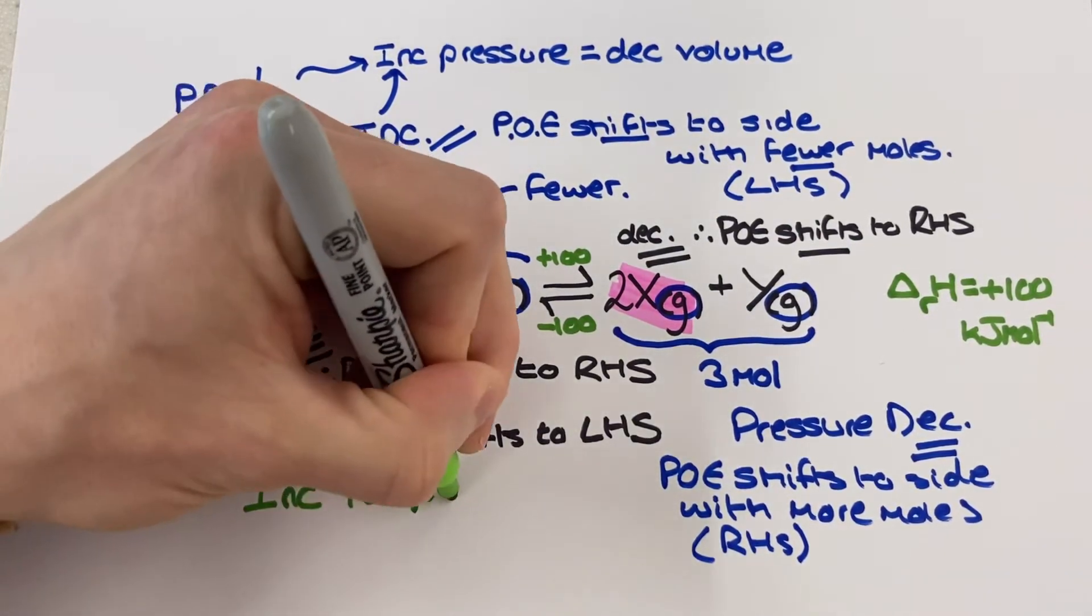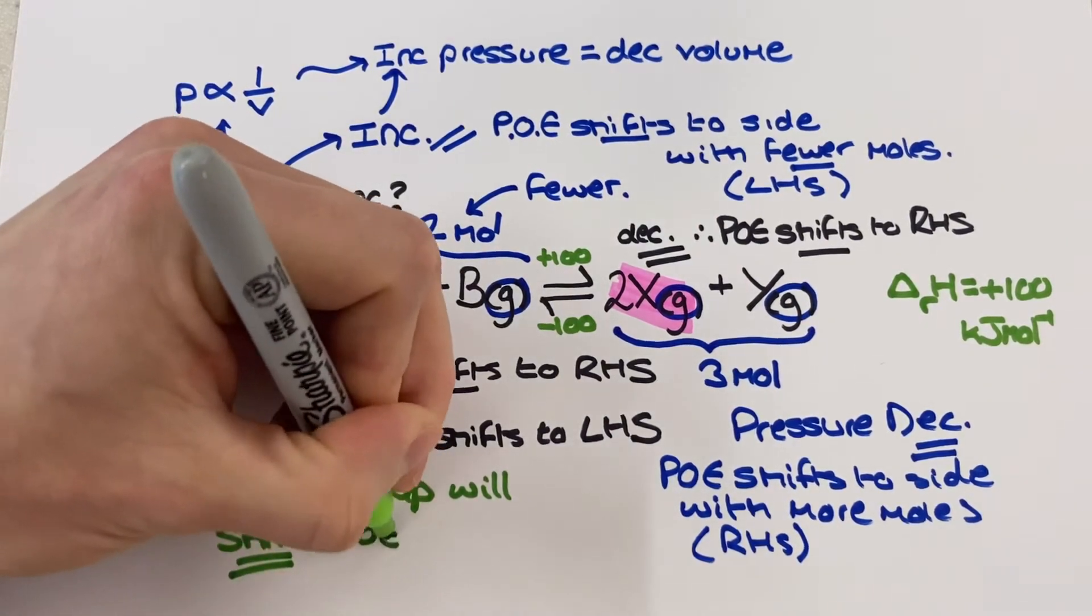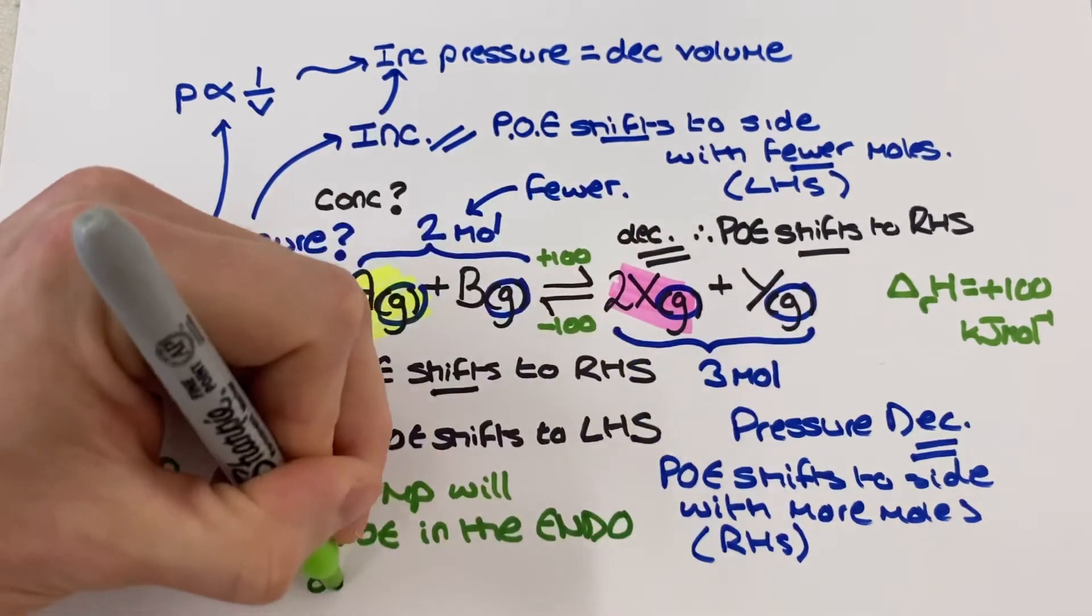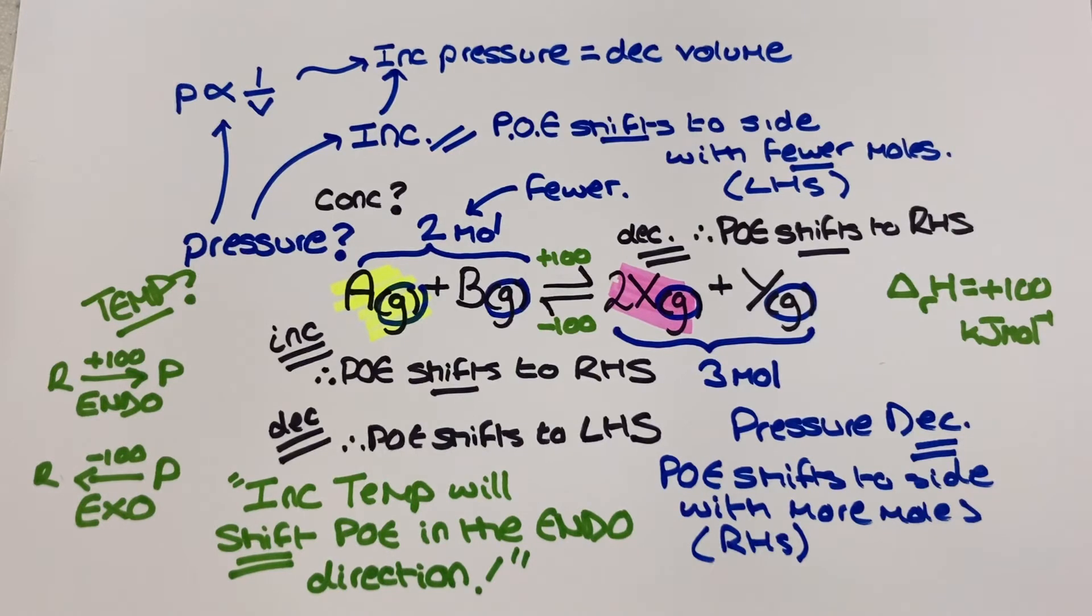So when temperature increases the position of equilibrium will always shift in the endothermic direction. This is to oppose the change and lower the temperature. In your exam answer you need to really emphasize as well whether this shift is to the left or to the right.